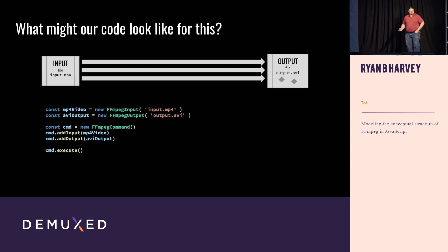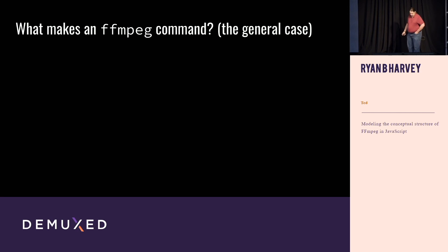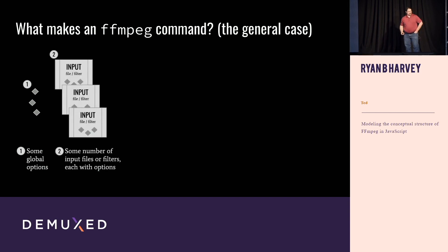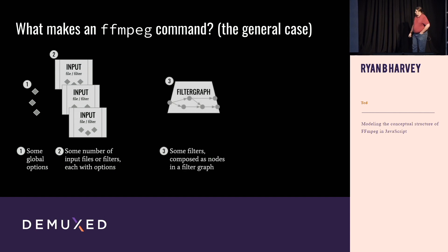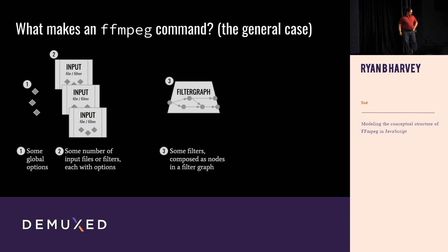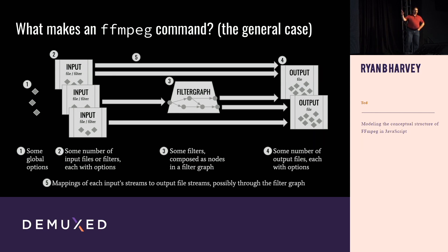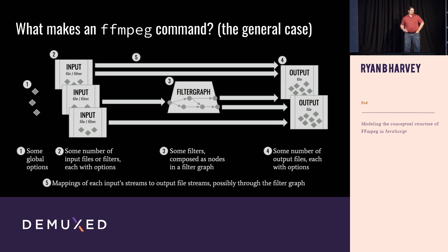What about real life? In a more general case, we might have some global options — the FFmpeg command line accepts global options. We can have multiple input files, perhaps merging, concatenating, or overlaying them. We might have some filters in the pipeline, more than one output file each with its own options, some mappings, and some of those mappings might go through our filter graph. This is a more complete picture of what might be happening in one of our commands.